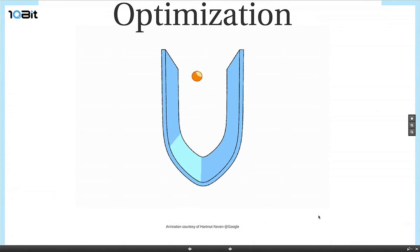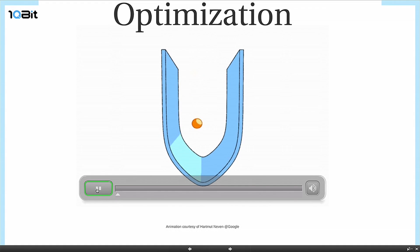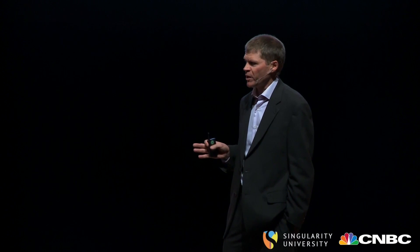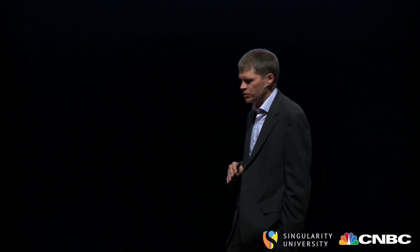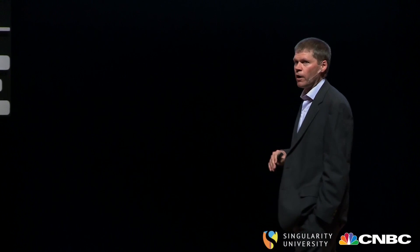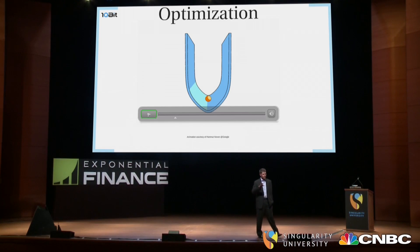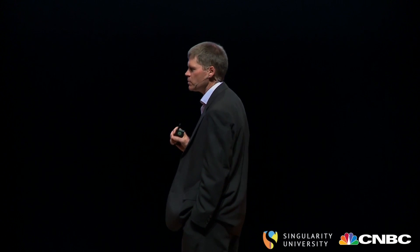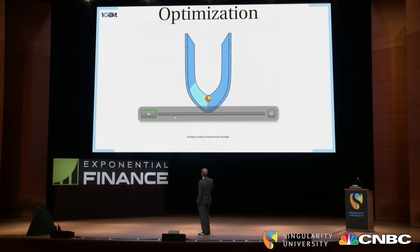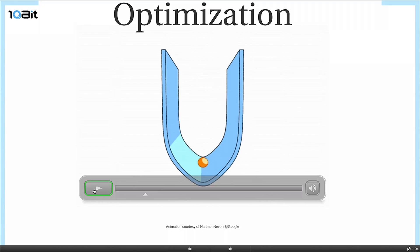I'm going to talk a little bit more about optimization. If you think back to Vern's talk, he showed a picture of a mountainous landscape and was saying that what we're trying to do with optimization is find the minimum — nominally the global minimum. So if we traverse the whole landscape, we want to find the minimum point across every valley. That is typically a very time-consuming problem to solve. We'll start with a much simpler problem: trying to find the minimum value of a U-shaped landscape.